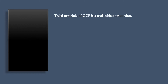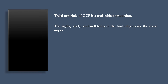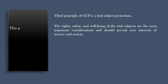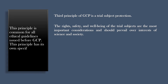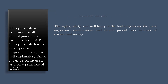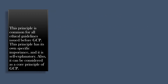The third principle of GCP is trial subject protection. The rights, safety, and well-being of the trial subjects are the most important considerations and should prevail over interests of science and society. This principle is common to all ethical guidelines issued before GCP, and it can be considered as the core principle of GCP.